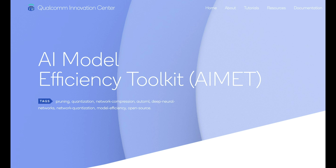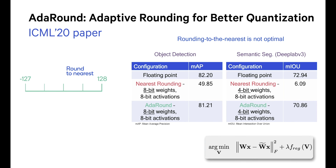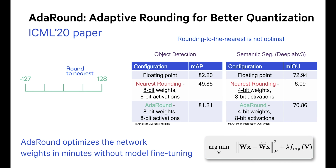These techniques are made available to the open-source community through AI Model Efficiency Toolkit. AdAround, which stands for Adaptive Rounding, is a post-training quantization technique, so it requires only minimal unlabeled data and no model fine-tuning. Rather than rounding to the nearest value during quantization, AdAround automates finding the best rounding choice in order to retain model accuracy.